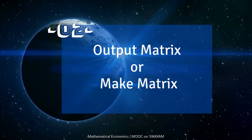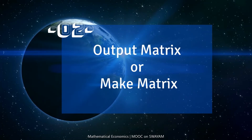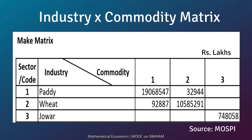The output matrix or make matrix is also called the industry by commodity matrix. In this matrix, the industries are entered in the rows and the commodities in the columns. The data for the industry-wise details of output are tabulated by merging the output flows from registered, unregistered manufacturing sectors and the output flows from primary and service sectors. The entries are in lakhs of rupees. The column sum gives the total output of the commodities.